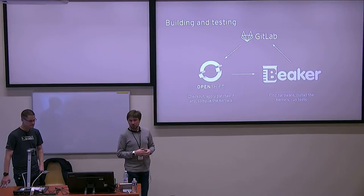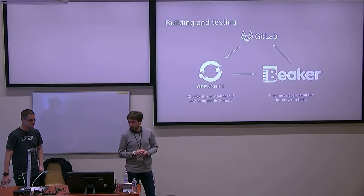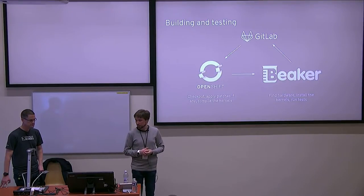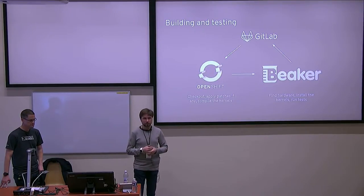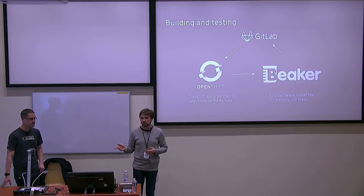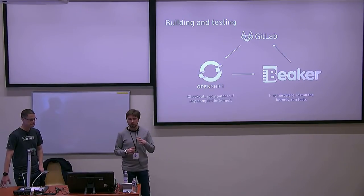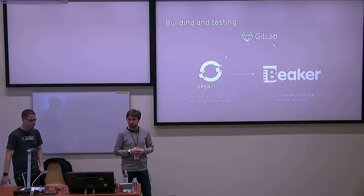Underneath GitLab we're using OpenShift to download those kernels, merge the patches, and build them. That lets us really shorten the build time — it's about five or six minutes now. And we're talking about building several architectures at once.